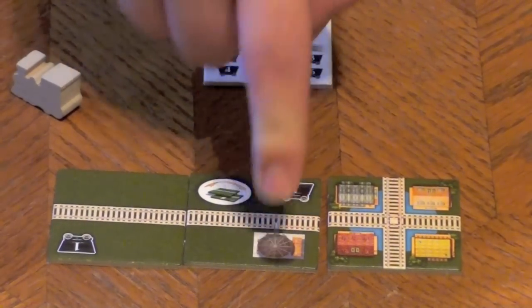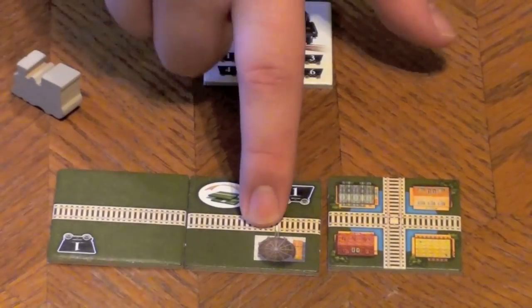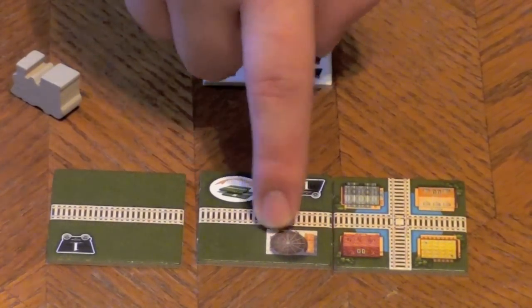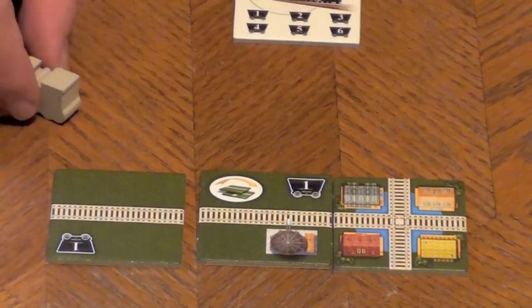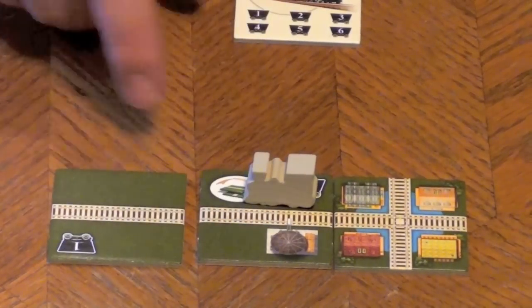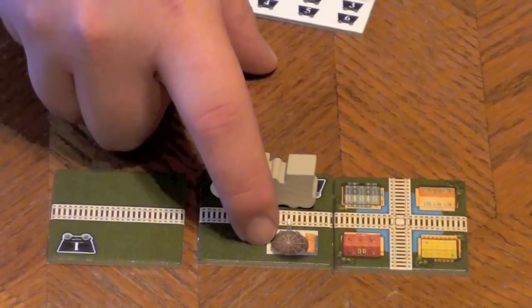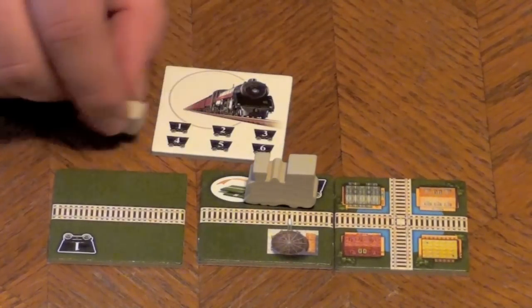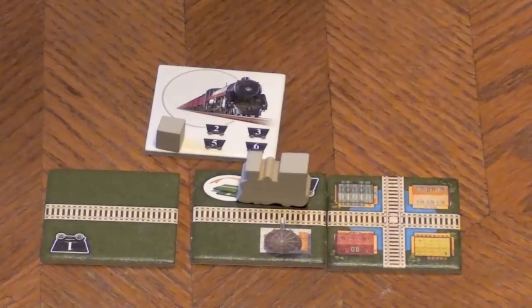Certain features allow you to take special actions. And the third action is actually to fill up your water tower. Fill up your train from a water tower, which is going to give you a bunch of steam. And in order to do this, you have to have stopped on that tile on the previous turn. What you can do then is forgo your entire turn in order to use the water tower and gain four steam.